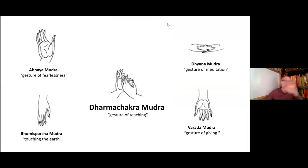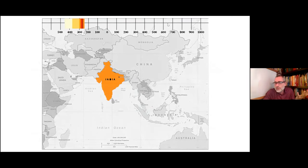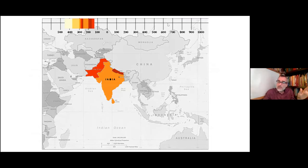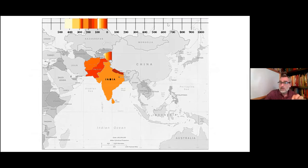So before showing any images of the Buddha, I wanted you to know these qualities: fearlessness, desirelessness, groundedness, assurance, teaching, and meditation. Those are the ideas that make Buddhism Buddhism. Those ideas spread down to Sri Lanka, up the Himalayas to Nepal, and into what is today Pakistan — these are the three general directions Buddhism spread out from India.